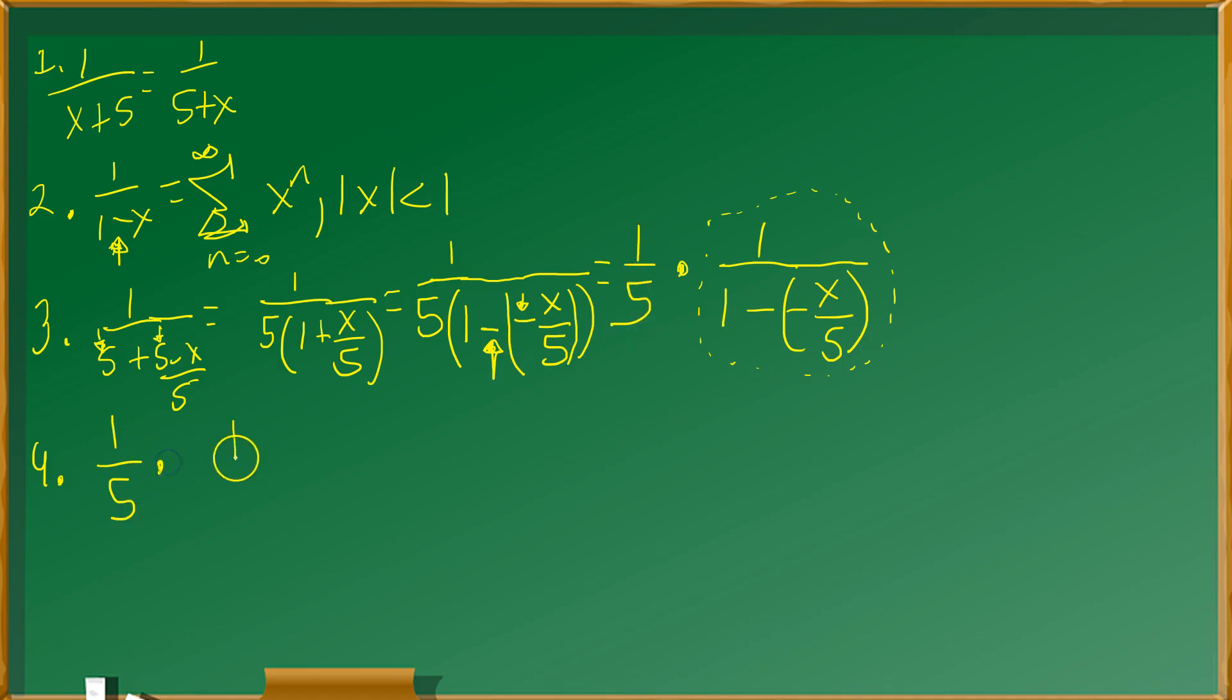And then I'm going to put the summation notation, n equals 0 to positive infinity. And here back in stage number 2, step number 2 where you see x right here, where you see that x, you replace that with the negative x over 5. Where you see x in the inequality, you also replace that with negative x over 5.